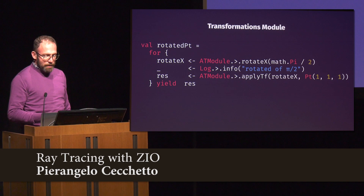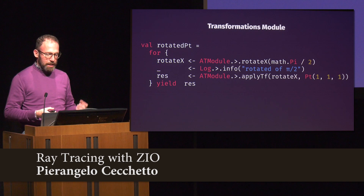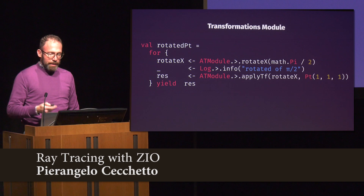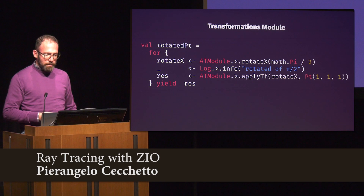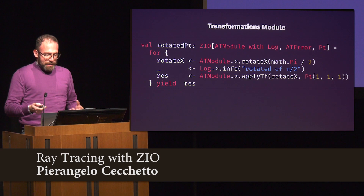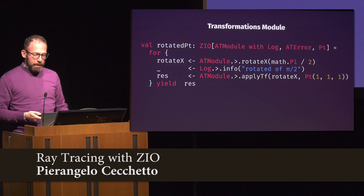With this we are already able to define programs that rely on this algebra — we don't even know yet how to implement the affine transformation module, but we can already write programs that rely on this logic. If we define another module that logs things following the same pattern, we can build business logic based on this approach. The contravariance of R makes the environment infer all the dependencies for us, mixing them in the final resulting environment.